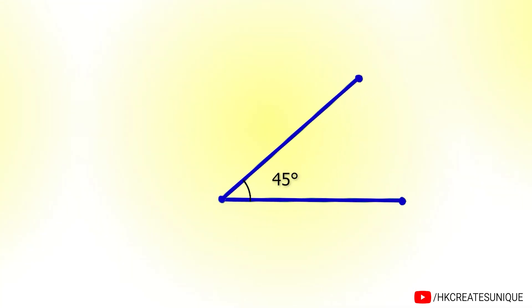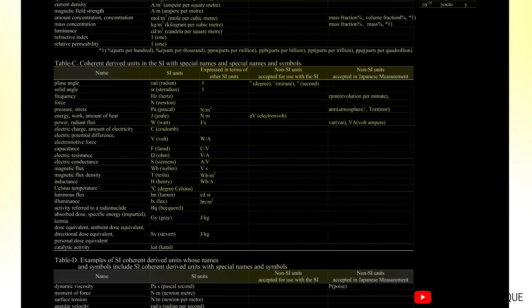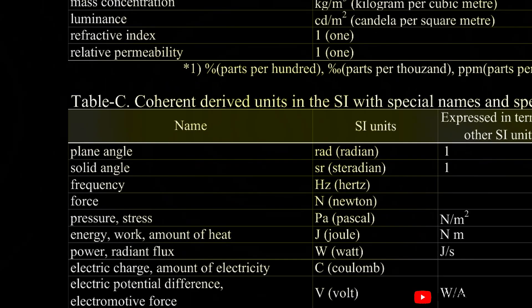So far, we have used degree as a unit of angle. But SI unit of angle is more preferable. SI unit of angle is radian. It is a different way to measure angle.